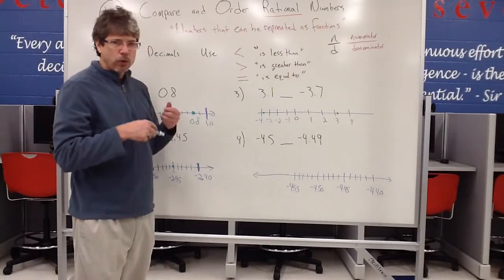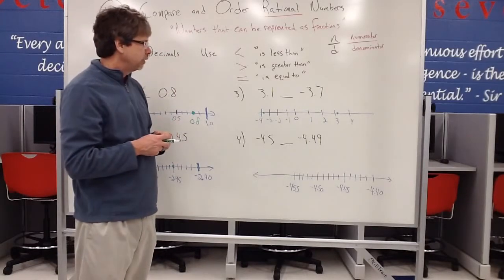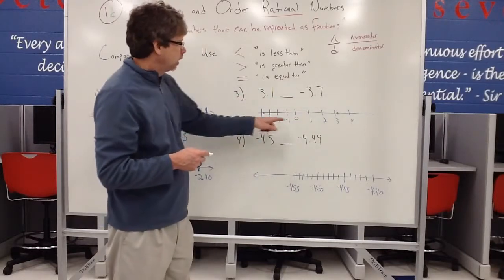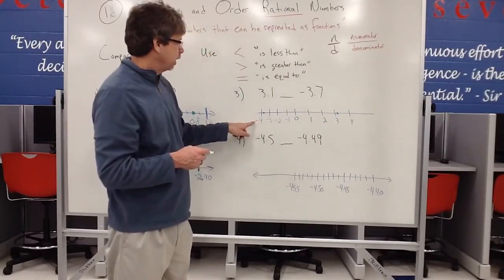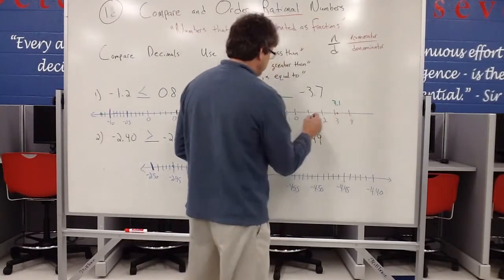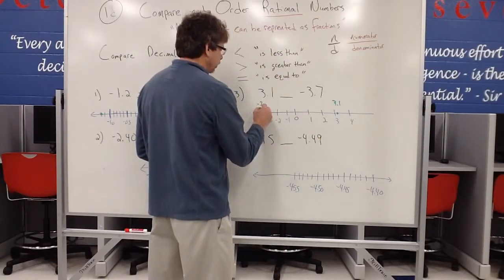So I don't have to have a real detailed number line, especially when I'm comparing positive numbers to negative numbers. It's pretty clear that a positive number will always be bigger than a negative value. So that 3.1, since it's over here, is much larger than a negative 3.7, which is over here.